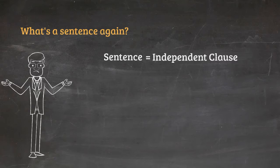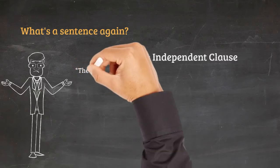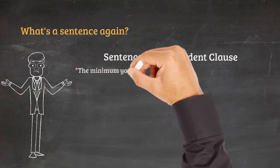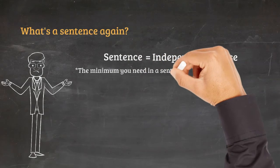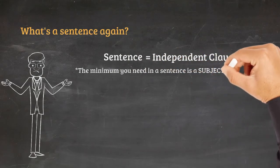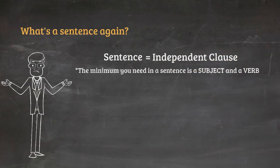Although there are many different types of words in English like adjectives, adverbs, pronouns, prepositions, etc., all that is really necessary in most cases is just a subject and a verb. In other words, who is the sentence about and what is that subject doing in the sentence.